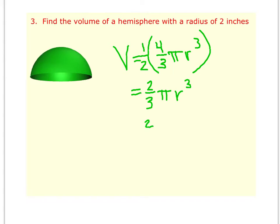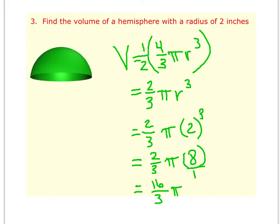So now I can enter in the radius of two inches. Two to the third power is eight. So we have two-thirds pi times eight. And again, like in the last problem, if you think of eight as eight over one and you multiply the fractions, you get 16 over three, which cannot be divided. So 16 over three pi, and that would be cubic inches because we're doing volume.